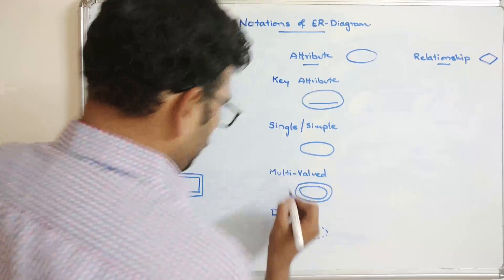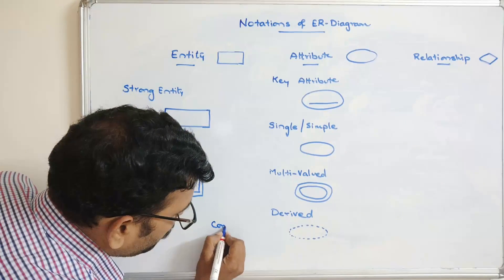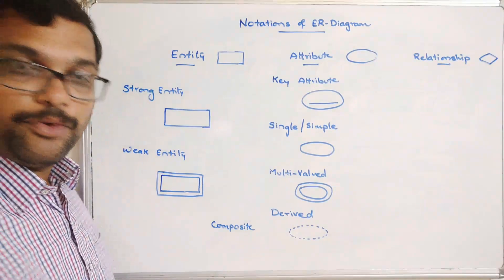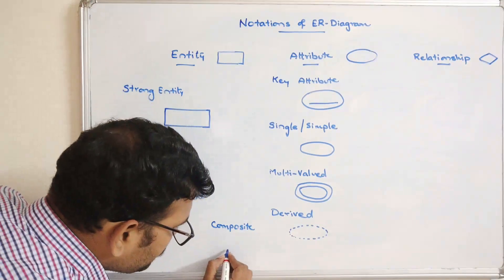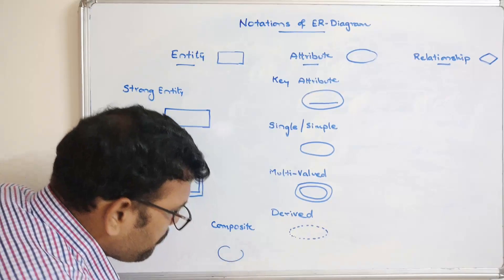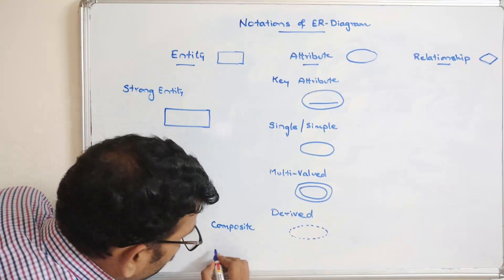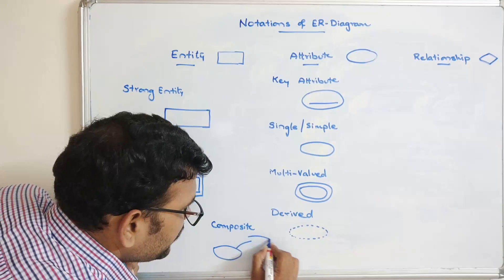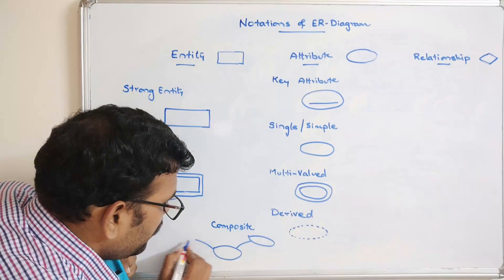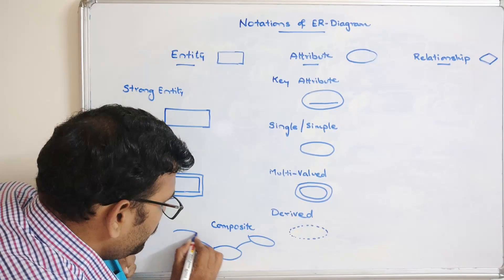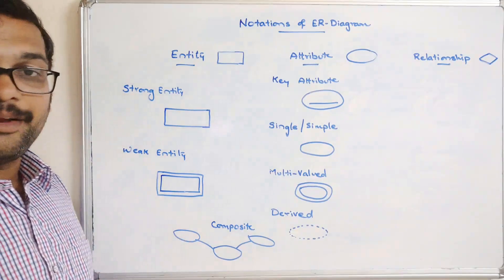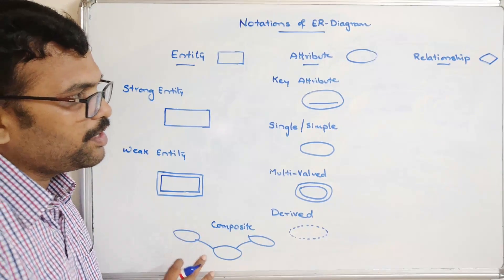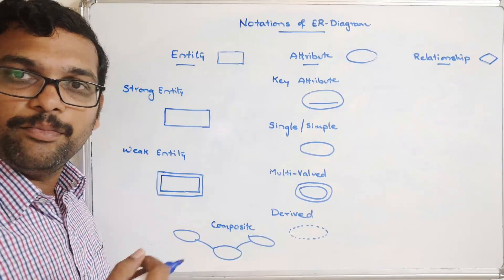A composite attribute is represented by an attribute that is further divided into different sub-attributes — that is, one attribute dividing further into multiple parts is considered a composite attribute.